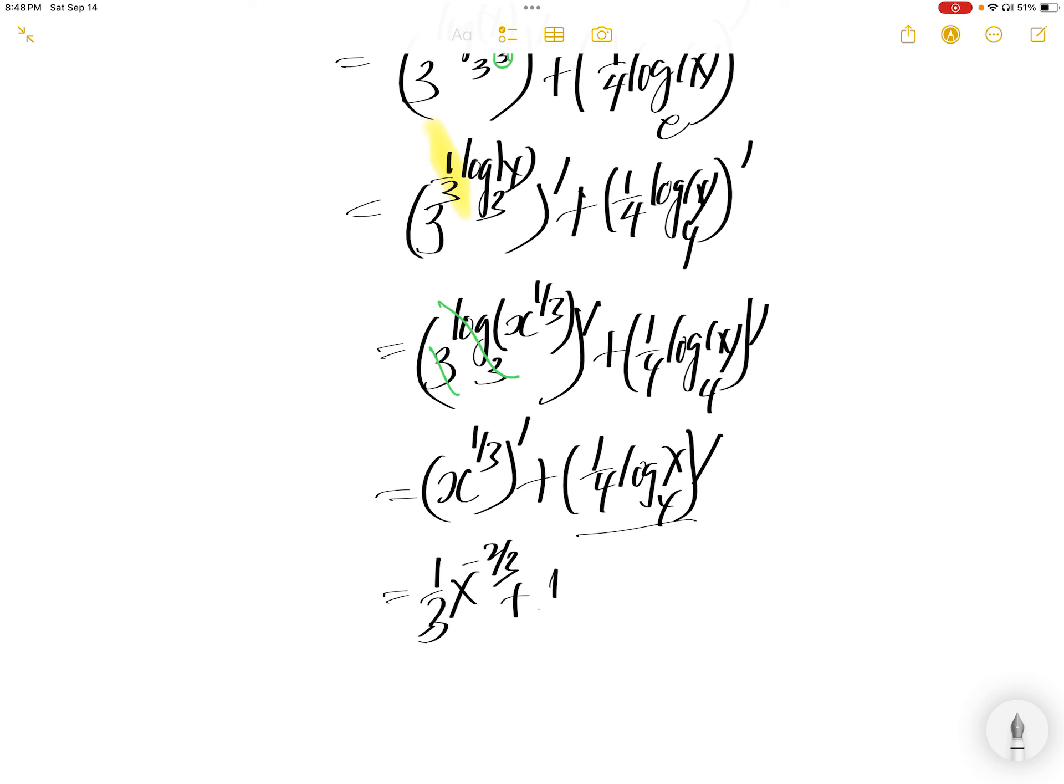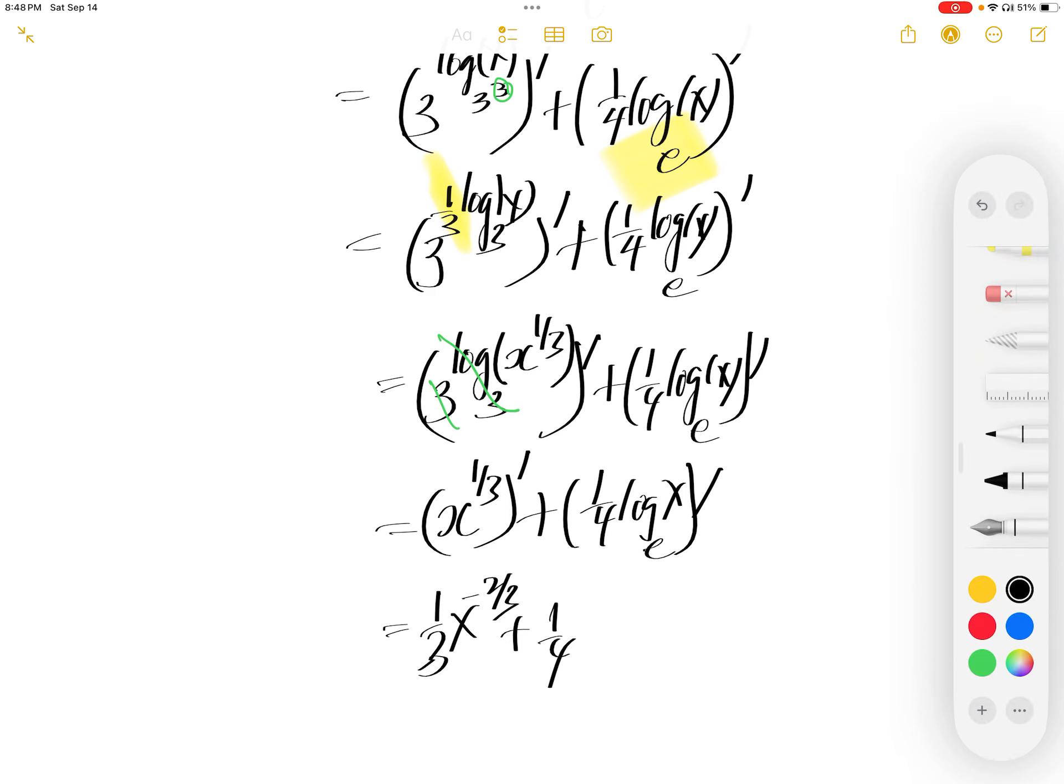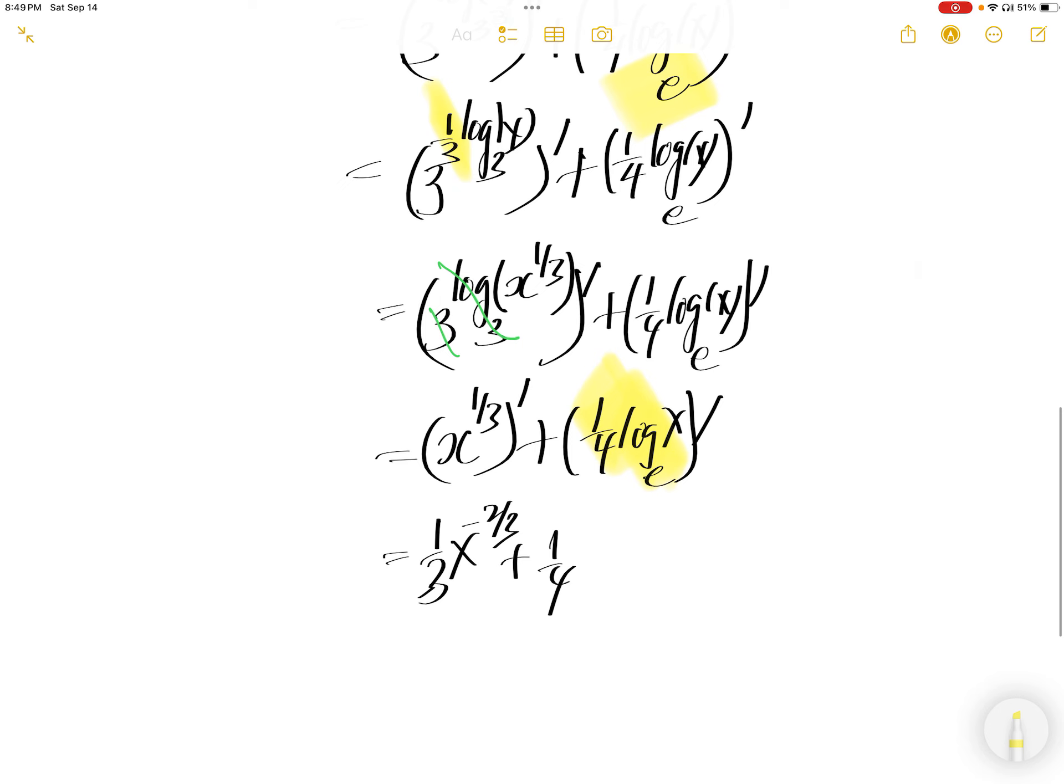And then derivative of this is a quarter times the derivative. Derivative of log, okay this is not 4, this is e. So the derivative of a quarter log x to the base e is quarter times the derivative, and the derivative of this is 1 over x.